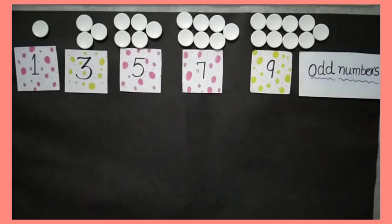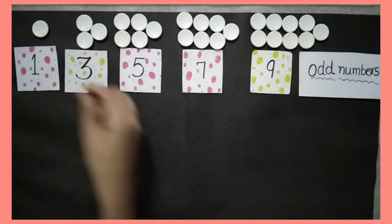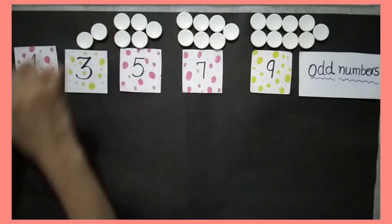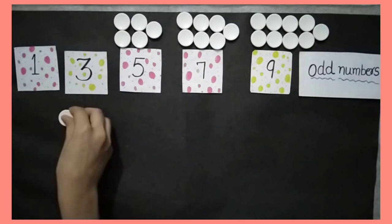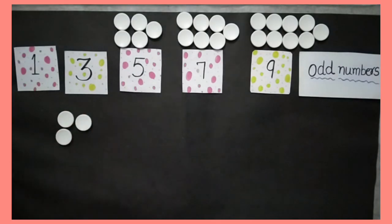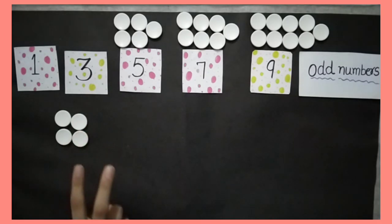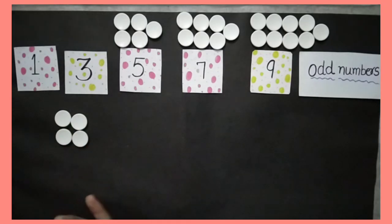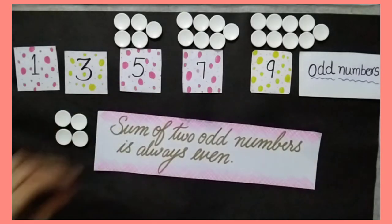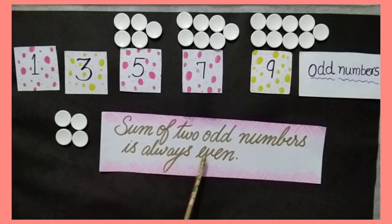Now I am taking any 2 odd numbers — 1 token and 3 tokens. Let's count them together: 1, 2, 3, 4. Four tokens make 2 pairs and no token is left behind. That means 4 is an even number. It means that the sum of 2 odd numbers is always even.